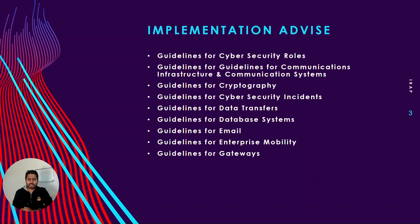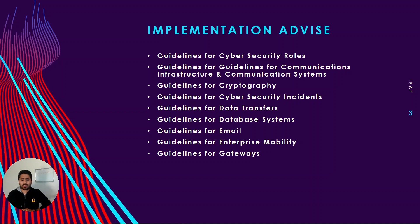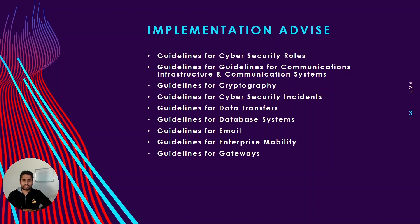The next two categories cover guidelines for communication infrastructure and communication systems — covering ISPs, telephone systems, video conferencing, and fax machines. The key point is to ensure only authorized personnel are using such services, as these can otherwise become a vector for data exfiltration and data breach. Organizations need to ensure there is a policy around it, logging and monitoring must be configured, and security risk assessments should be carried out on different internet service providers before consuming their services.